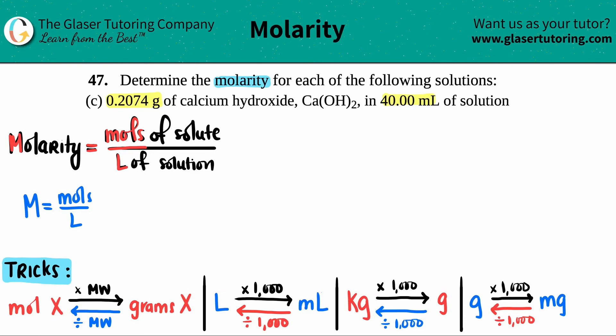First, let's go from grams to moles. Here's my trick at the bottom: if you're starting with grams and want to get to moles of the same compound, going from gram to mole we divide by the molar weight. So I need to find the molecular weight of Ca(OH)2.